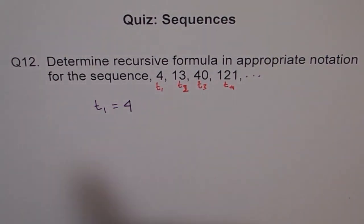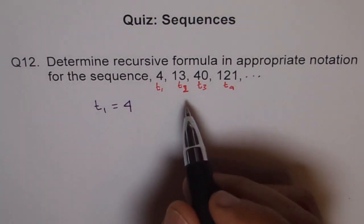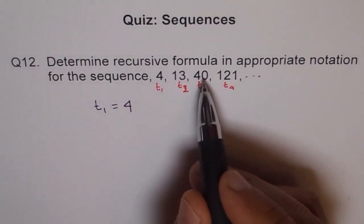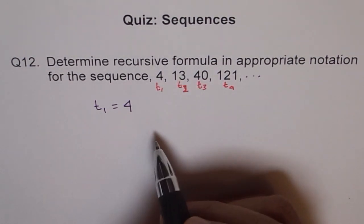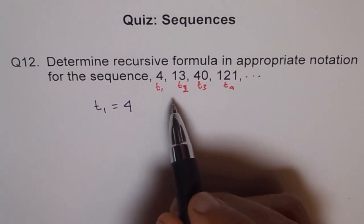Now T1 is 4. How will you get 13 from 4? And then we have to use the same method to get 40 from 13. So in recursive formula, what we are trying to do is we are trying to get the next term from the previous term.